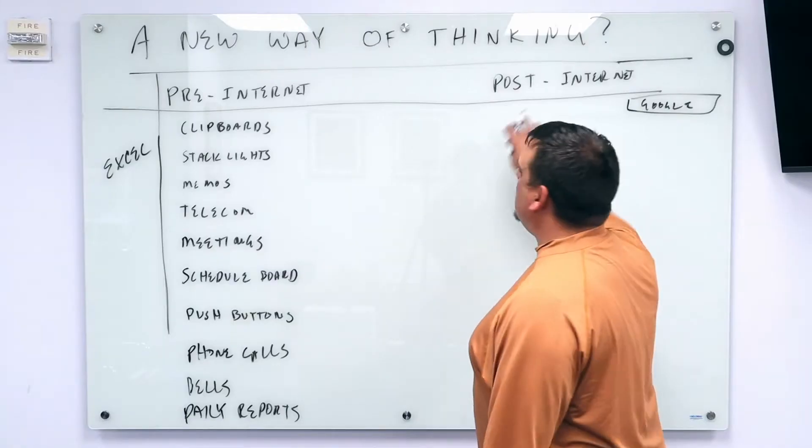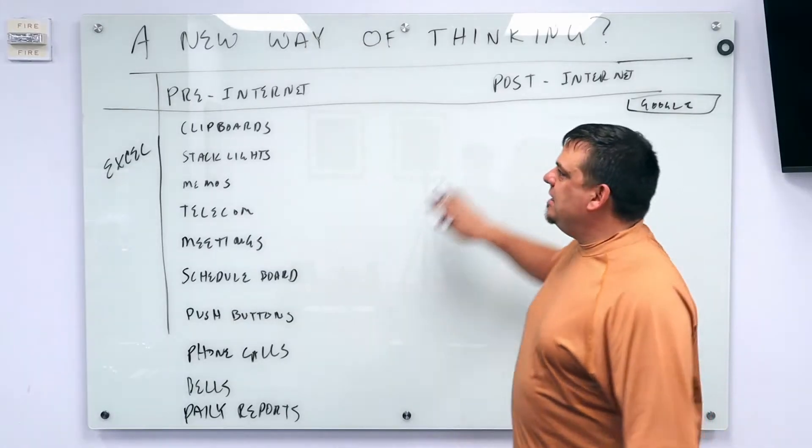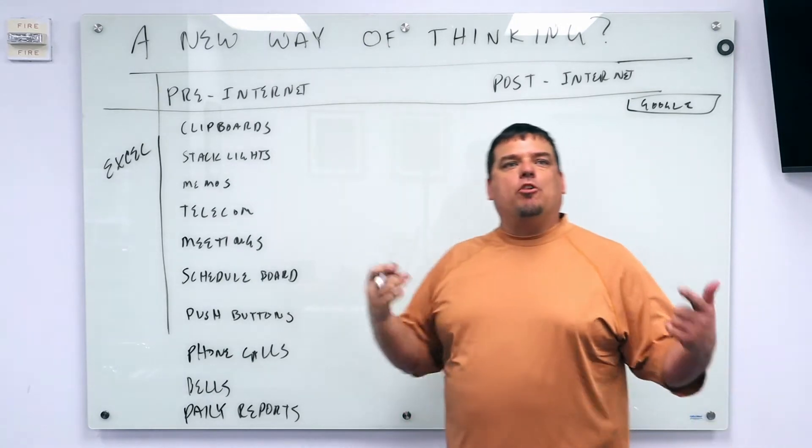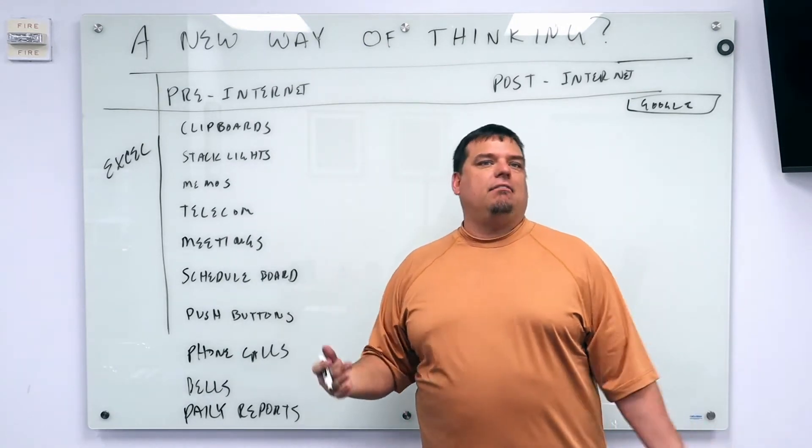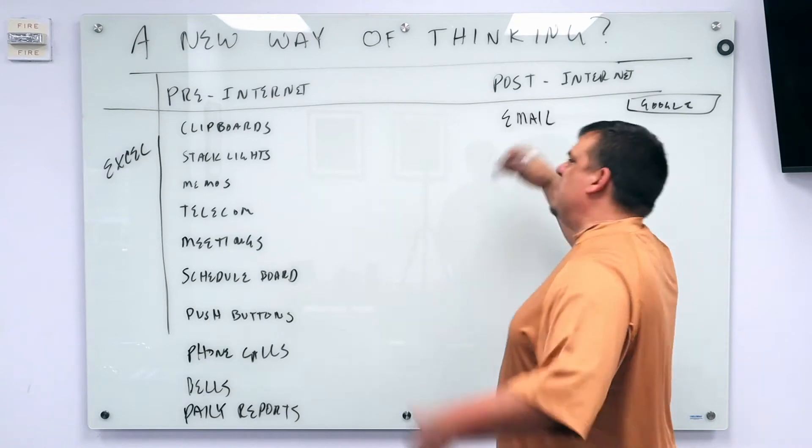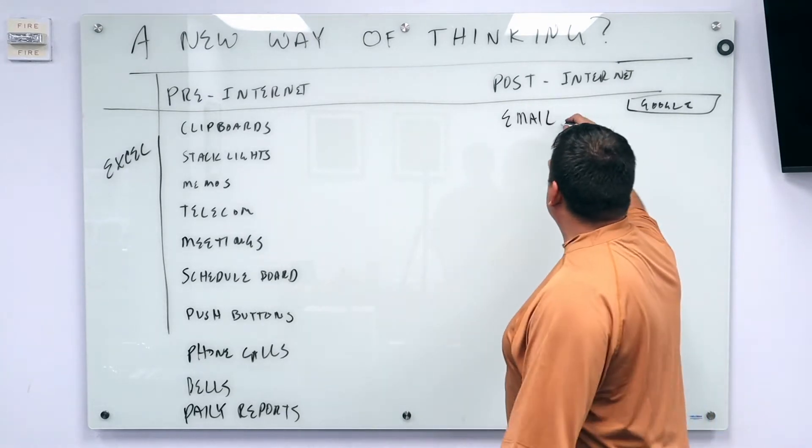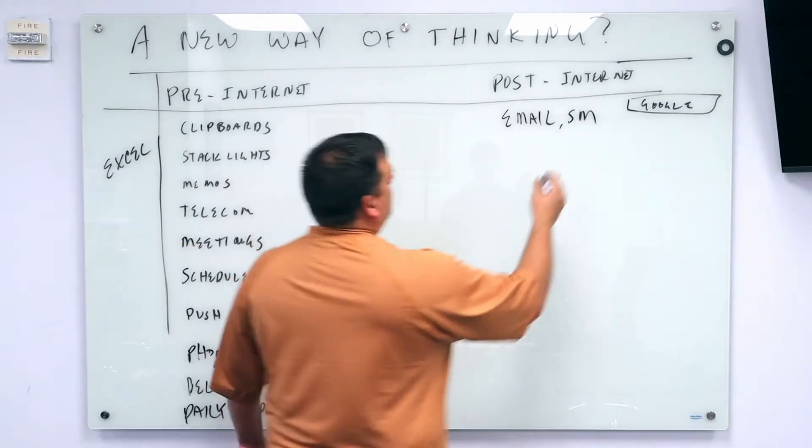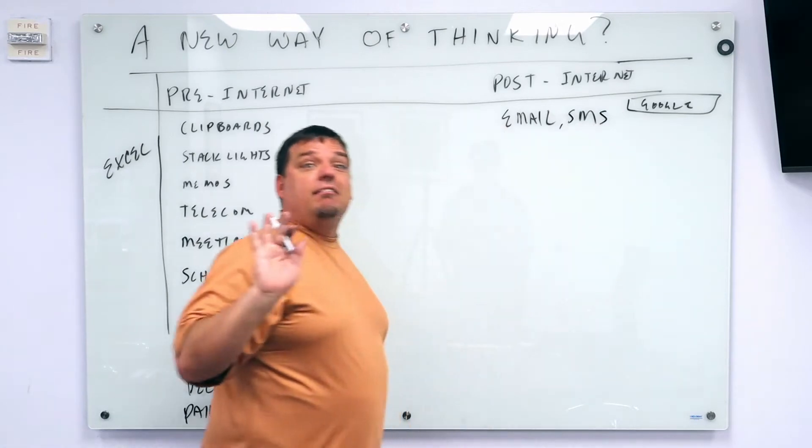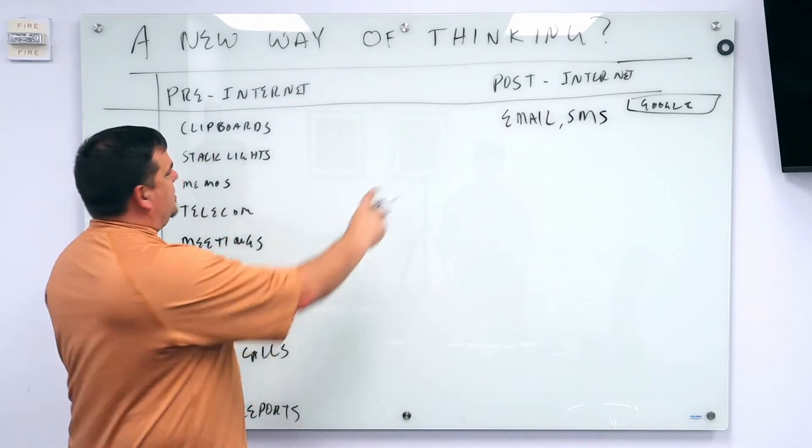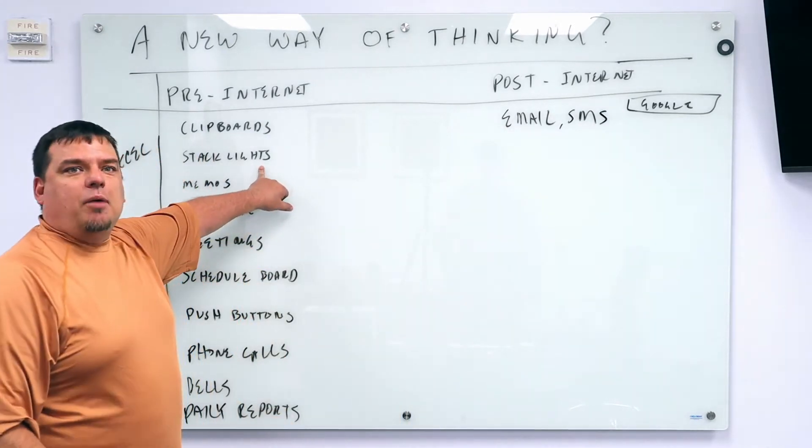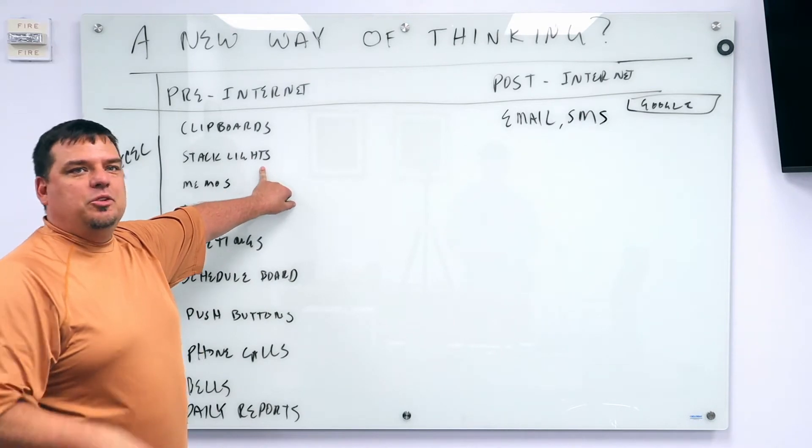All right. In the post-internet days, what is the number one form of communication in a plant? It's probably email. Email each other, maybe a little bit of SMS. How does the typical plant today communicate a problem from the floor to someone else?